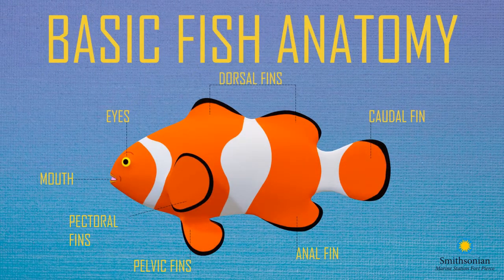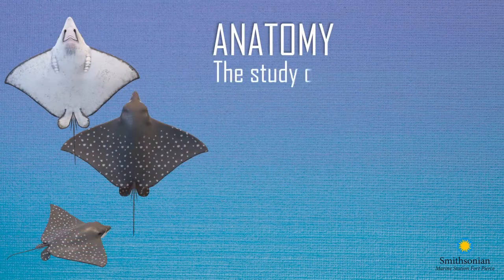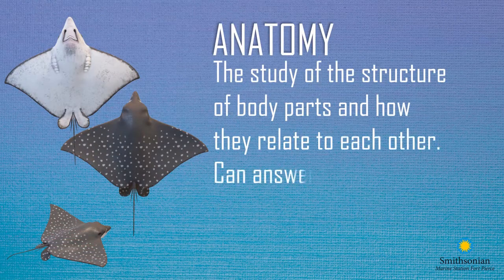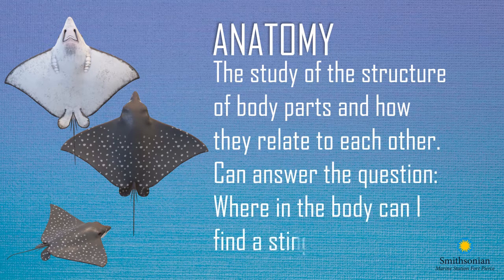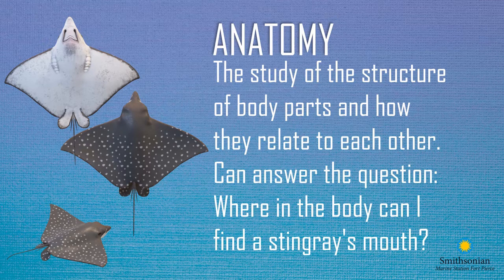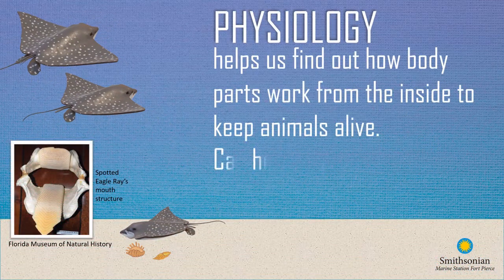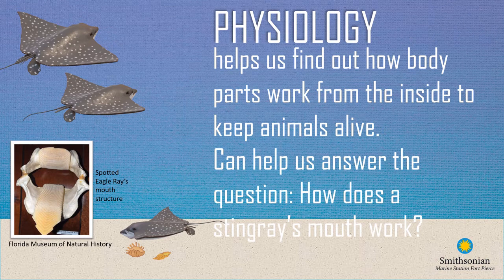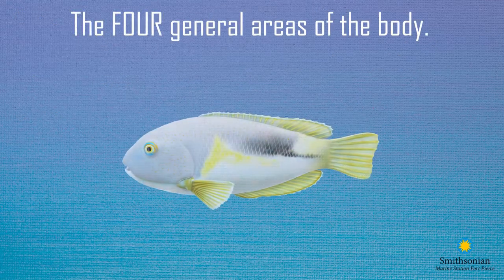This video will help you learn how to identify some of these structures and how they help a fish move around, navigate, and survive. To study the bodies of fish, scientists apply two branches or types of science. Anatomy is the study of the structure of body parts and how they relate to each other — anatomy can answer the question: where in the body can I find a stingray's mouth? Physiology helps us find out how body parts work from the inside to keep animals alive, answering: how does a stingray's mouth work?